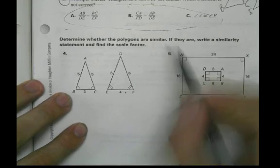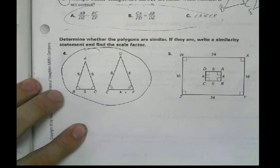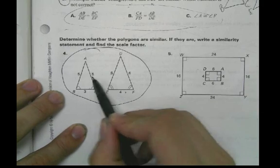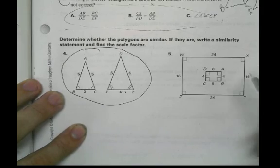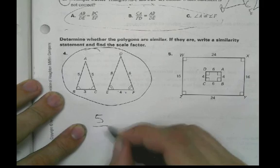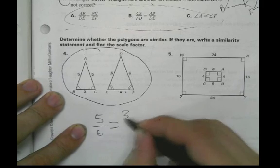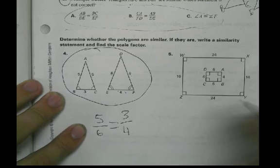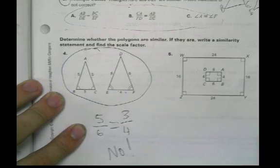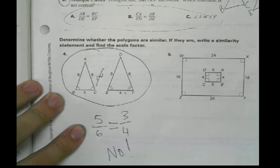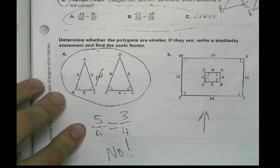All right, let's move on to the next one. Determine whether the polygons are similar. Are these guys similar? Well, five and six, five to six, so that's kind of like going up, but this is three to four. Does five over six equal three divided by four? No. Therefore, they are not similar. All right, now check out this one. You can do the same idea.